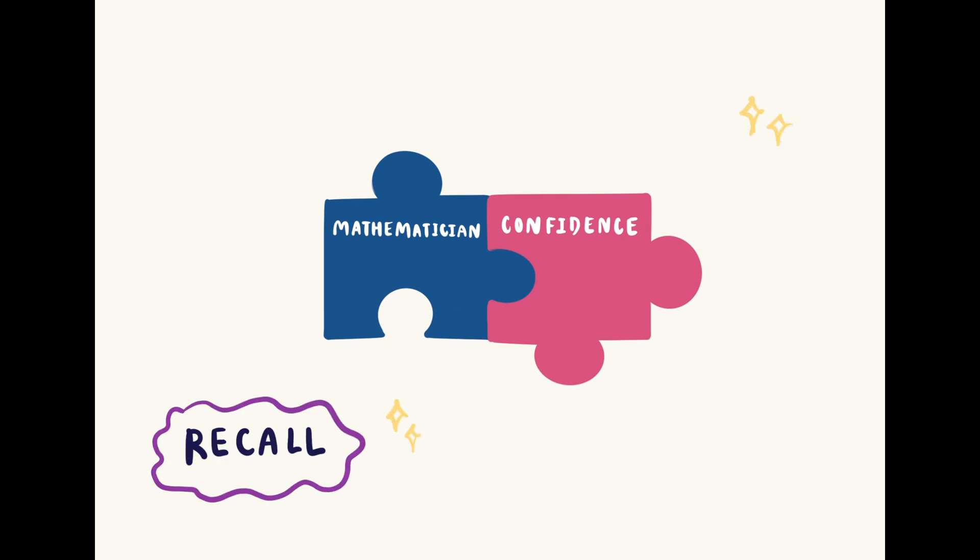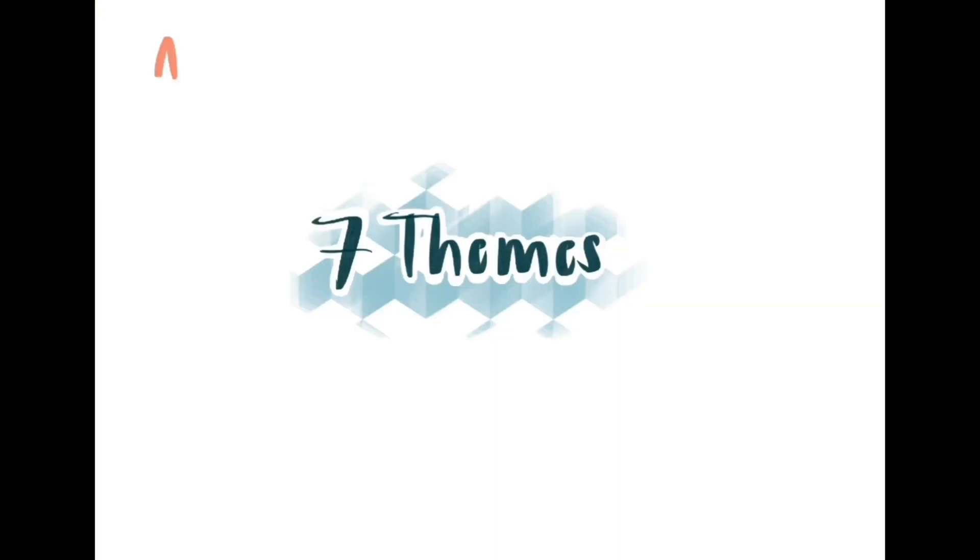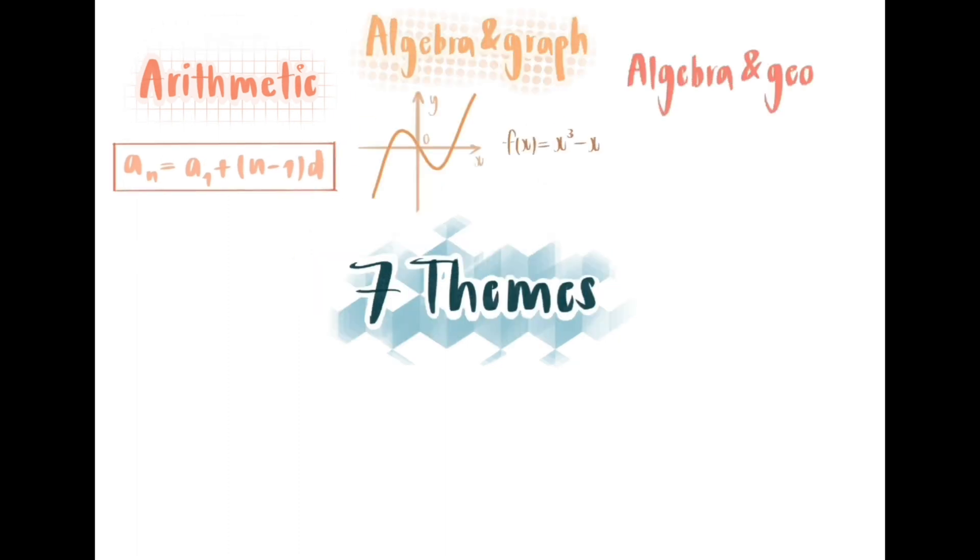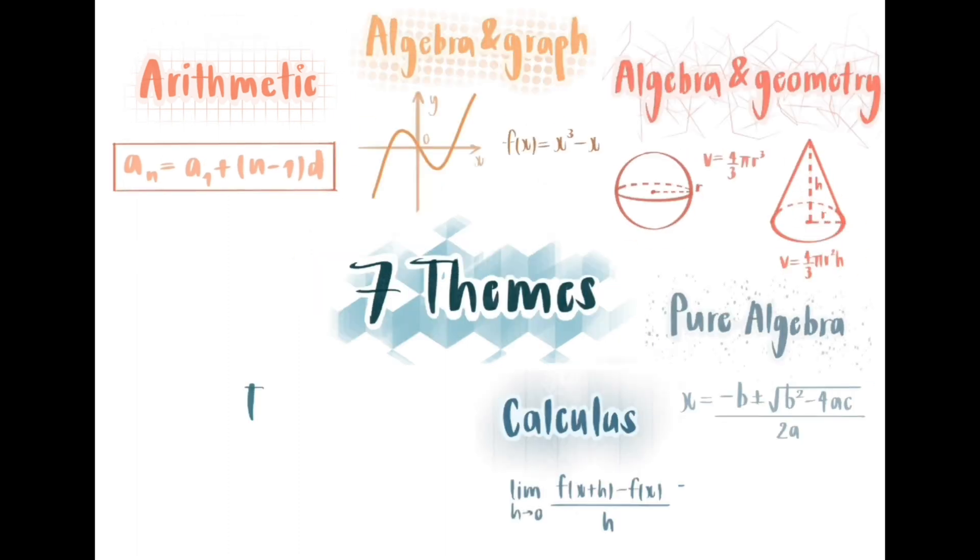The confidence section consists of 42 multiple choice questions, followed by the mathematician section with 30 open responses. The confidence section has 7 themes containing 6 questions each.